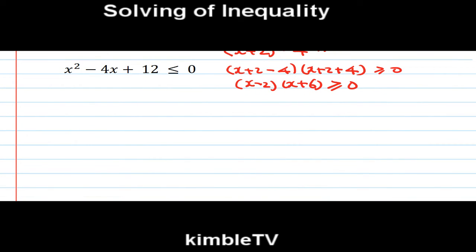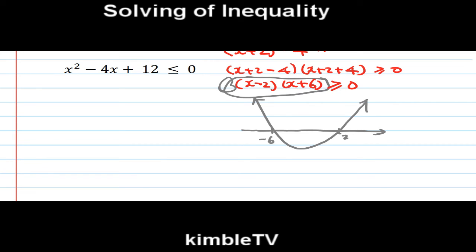Drawing the number line with roots minus 6 and 2. This sign is positive, so we start from here like this. The Y value must be greater than 0 — positive. So this region and this region. Therefore X is greater than or equal to 2, or X is less than or equal to minus 6. This is the answer.